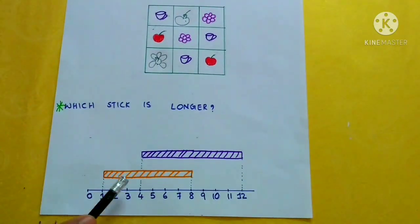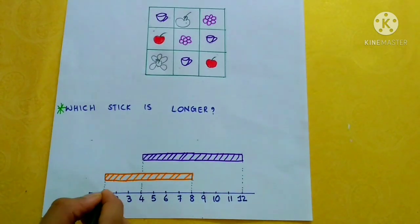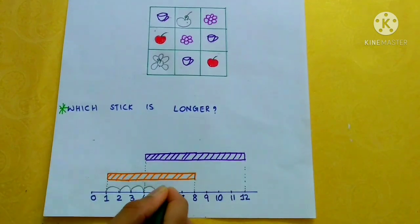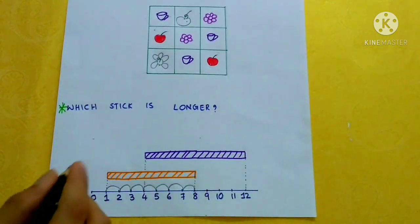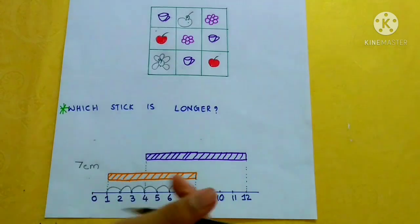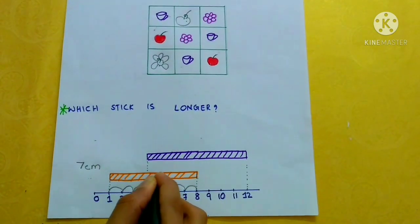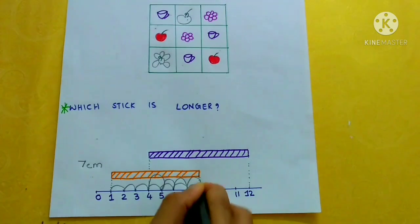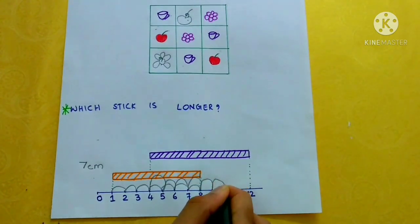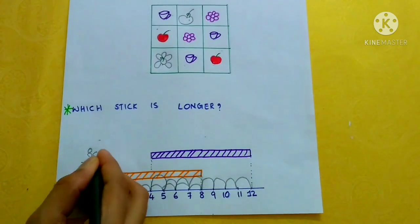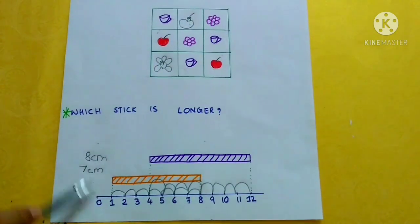Which stick is longer? For the orange stick, start counting from 1: 1, 2, 3, 4, 5, 6, 7. The orange stick is 7 cm. The purple stick is 8 cm. The purple stick is longer than the orange stick.